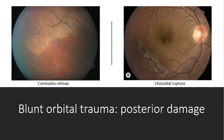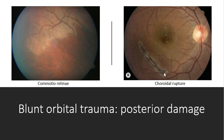The images here show posterior damage caused by blunt orbital trauma. The image on the left is of a commotio retina — basically a concussion of the sensory retina — which results in this cloudy swelling of the retina that gives it a grey, whitish appearance. It usually affects the temporal fundus and will generally subside without requiring treatment. The other thing that can occur is a choroidal rupture, involving the choroid, Bruch's membrane, and the retinal pigment epithelium. If the choroidal rupture is peripheral, the patient may not even notice it, but in this case it's right over the macular area, so their vision is going to be affected.